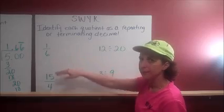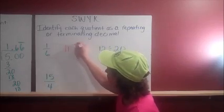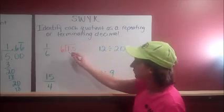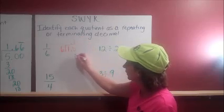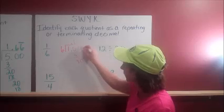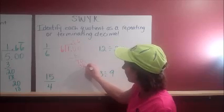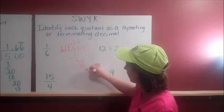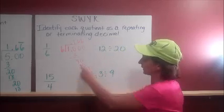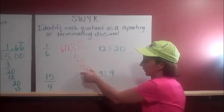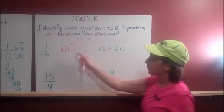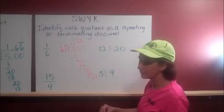So 1 divided by 6. In order to divide, I would first change it to 10 tenths. Now I can see that this is going to continue in this pattern. So I would put a line over the top of the 6. I would not put a line over the top of the 1 because the 1 is not part of the repeating decimal.